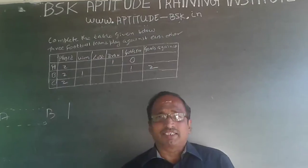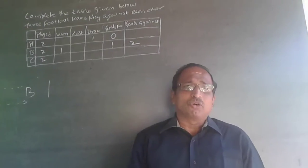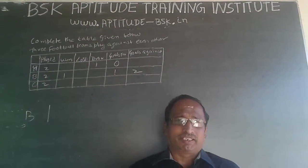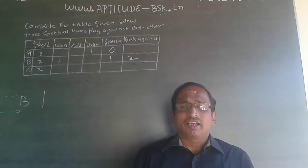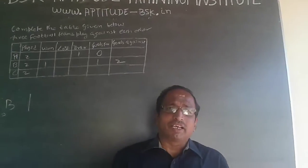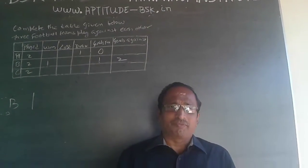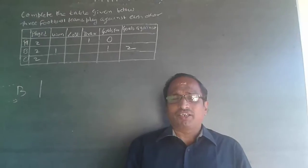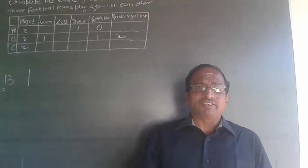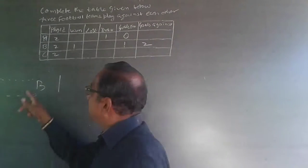The same goal is 'for' one person and 'against' another person. If I want to win, my goals 'for' should be more than my goals 'against'. If my goals 'against' are more, it's a loss. If both are equal, it's a draw.